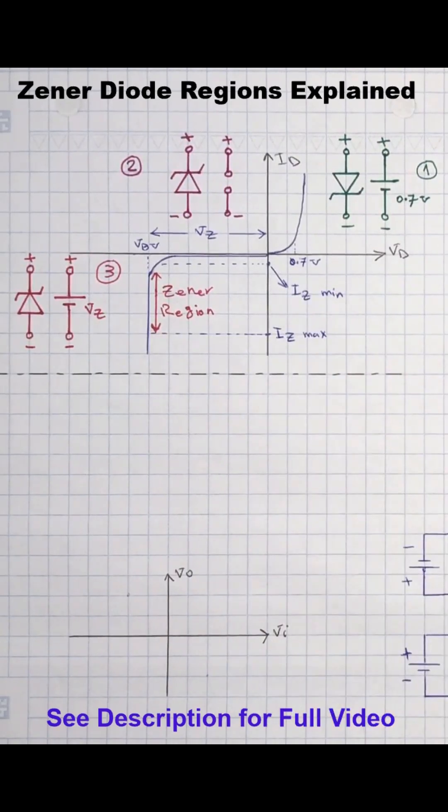When a Zener diode is forward biased then it will operate as an ordinary diode. So it allows current flow in one direction and prevents current flow in opposite direction.